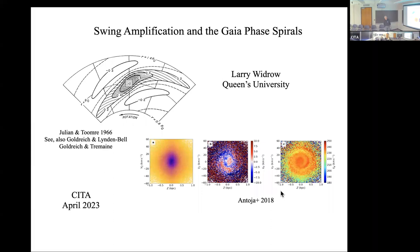Thank you and thanks for the invitation and for arranging the visit. It's always good to be back at CIDA and see some familiar faces and meet some of the new postdocs here. This talk is going to draw a connection between an old idea of how spiral structure formed called swing amplification, which dates back to early work by Julian and Toomre, Goldreich, Lynden-Bell and Tremaine in the 60s and 70s, to a new feature of galactic dynamics discovered in the second data release of Gaia by Antoja et al. in 2018.